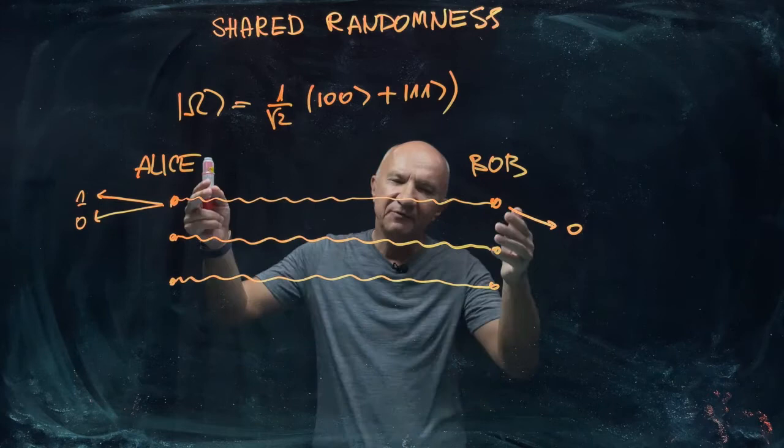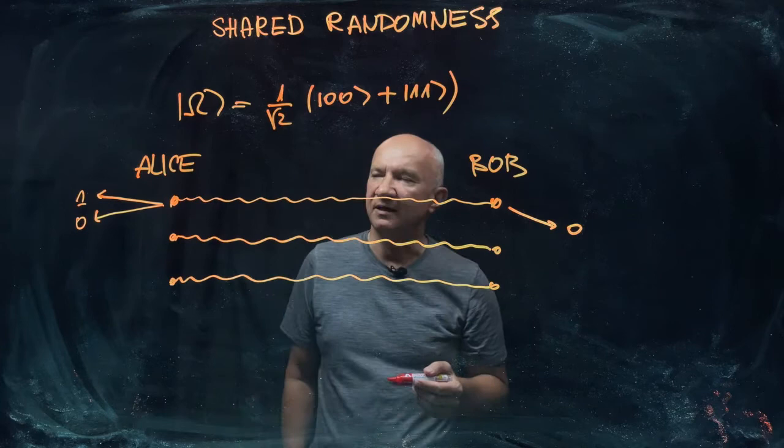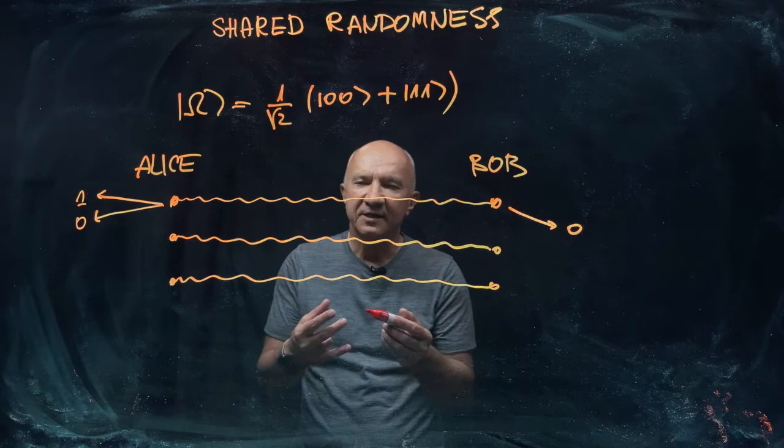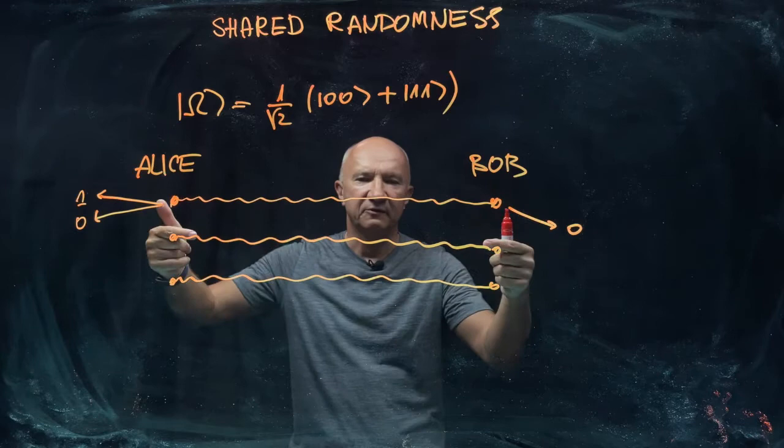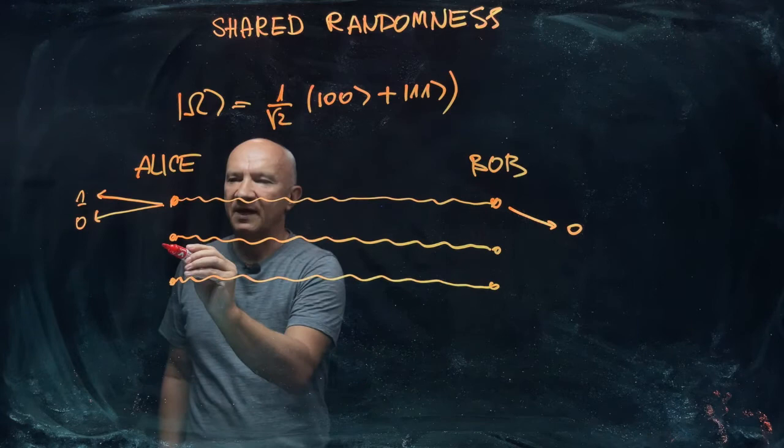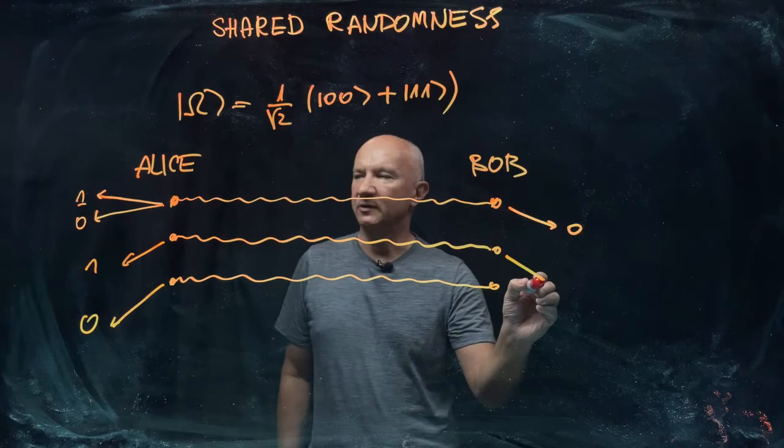But if they have many qubits like this, at least one good thing is, even though they cannot communicate any bit values between themselves, at least what they can do, they can generate shared randomness. So Alice and Bob, by going through qubits that they have at their disposal, the pairs of entangled qubits, they can perform the measurement. If Alice gets outcome one here and outcome zero here, Bob will also get one and zero here.